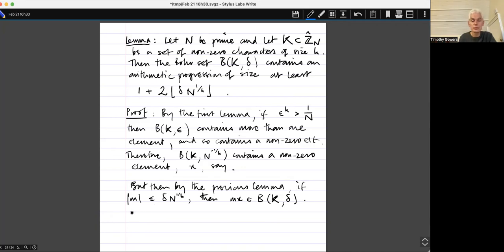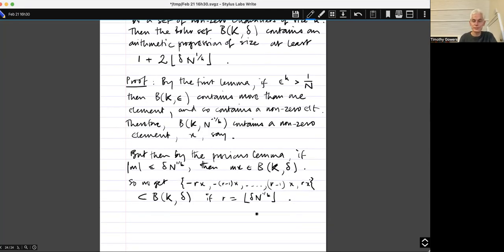So we get that minus, what should I call it? Rx, minus R minus one X, all the way up to Rx is a subset of B K delta if R equals delta N 1 over k floor. And then the size of that set is 1 plus 2 delta N to the one over k.